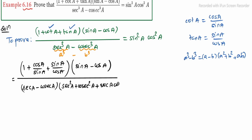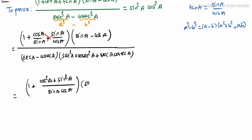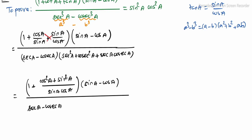Now simplify the numerator. Using cross multiplication: cos²A + sin²A divided by sin A · cos A, into (sin A minus cos A) as it is. The denominator remains (sec A minus cosec A) with those terms.